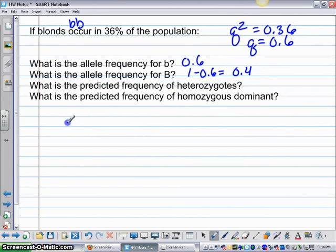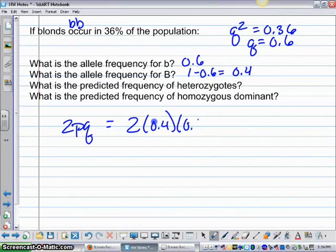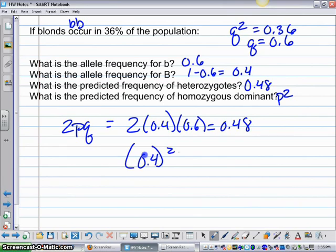The predicted frequency of heterozygotes, 2PQ, equals 2 times 0.4 times 0.6, which equals 0.48. That's 0.48. And then what's the frequency of homozygous dominant? That's P squared. So 0.4 squared equals 0.16.